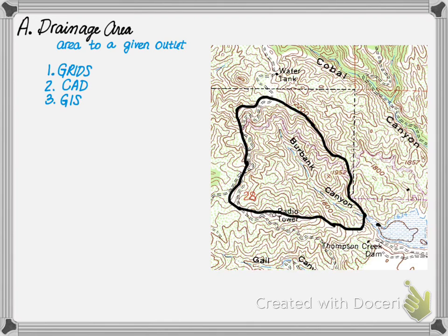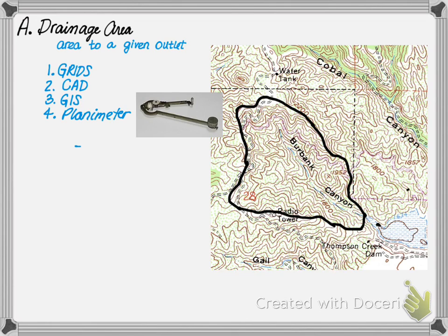This can be done by putting grids over the watershed area and counting the squares, knowing the size of each square. The data can be brought into CAD software and measured based on a scale. It can be done in GIS. In addition, it can be done using a planimeter — a tool which allows you to determine the watershed area using a device similar to the one shown in the image.